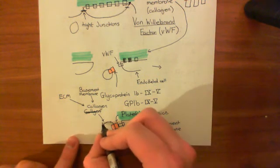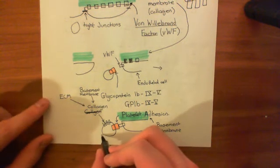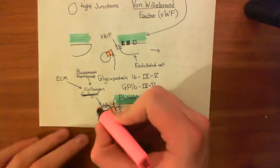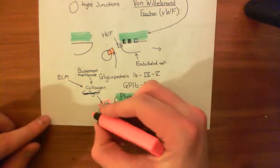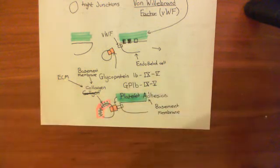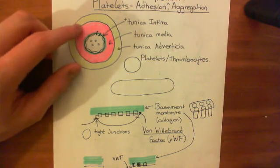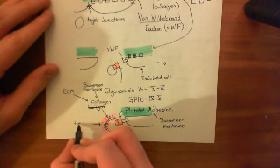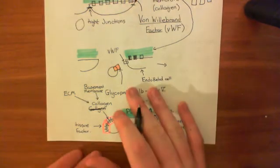The platelet has a collagen receptor, which is actually a G-protein coupled receptor - a seven transmembrane receptor. There is another G-protein coupled receptor which can be activated by tissue factor, or factor three. Somatic cells have tissue factor in their cell membrane. Cells in the tunica media, or even in the tunica adventitia, will have tissue factor in their cell membranes. So it is plausible that this platelet will come into contact with tissue factor and that it will activate the platelet.